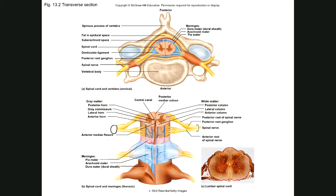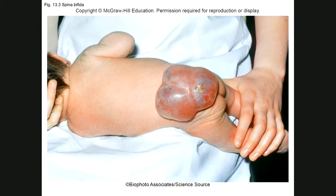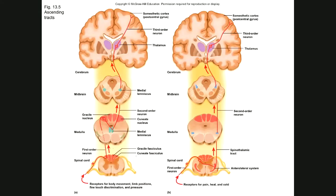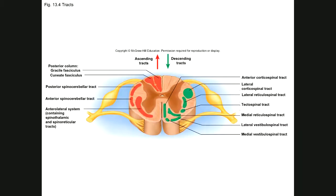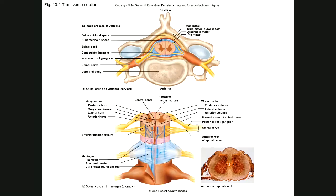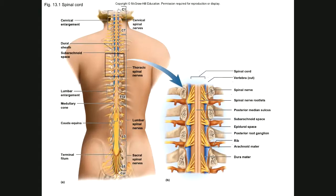Here is a nice figure showing the ventral root, or anterior root, and the posterior root coming together as a spinal nerve. The human spinal cord has 31 pairs of spinal nerves — one on each side of the spinal cord, right and left — adding up to 31 pairs total.